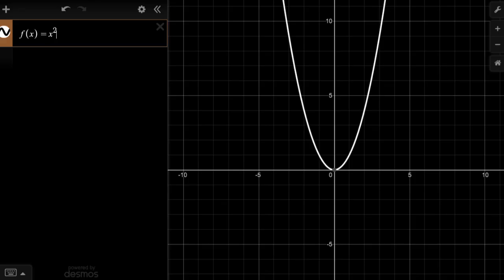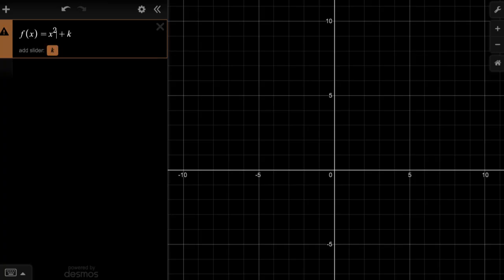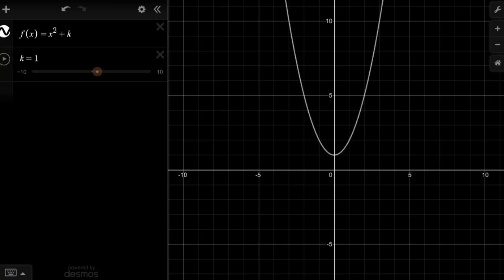And we can set up a slider here to make that a little bit clearer. So if I just replace this with the variable k, then we can add a slider k here. And this is just allowing us to set what k is equal to. So here k is equal to one, so this is x squared plus one. And notice, we have shifted up.